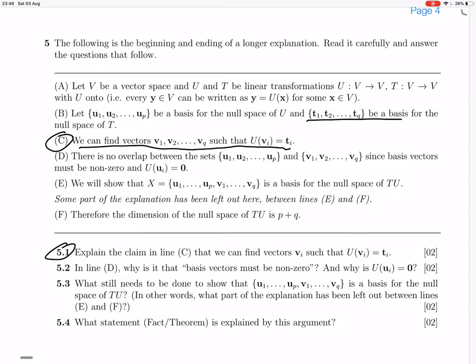What do we know about the vectors vi, the vectors ti, and the linear transformation u? Okay, so vi. Oh, those are just found in C. Ti is a basis for the null space of T. And u? U is a linear transformation from V to V, and u is onto.